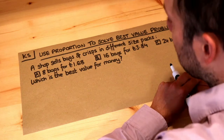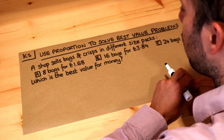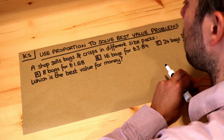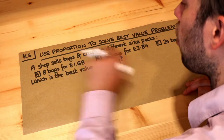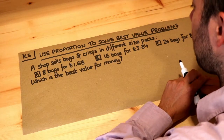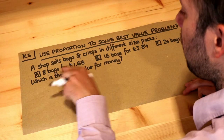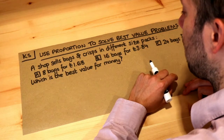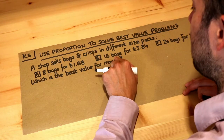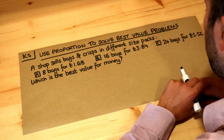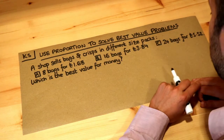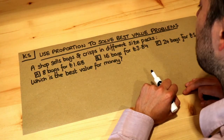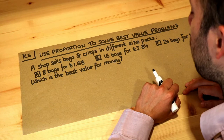Hello and welcome to this Dr. Rosemath's key skill video on using proportion to solve best value problems. A shop sells bags of crisps in different size packs, so we can buy either 8 bags for £1.68, or 16 bags for £3.84, or 24 bags for £5.52. Which of these packs gives the best value for money?